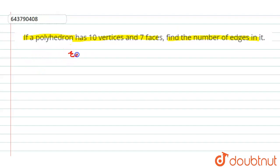With the help of Euler formula we can find the number of edges. So E is equal to F plus V minus 2.